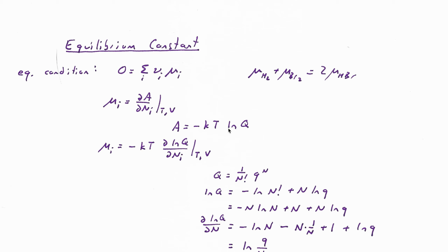All right, so we've found that the idea of an equilibrium constant shows up when we consider the reactants and products in a reaction to be ideal gases. The next step is to understand what the equilibrium constant looks like when the reactants and products are not ideal gases.